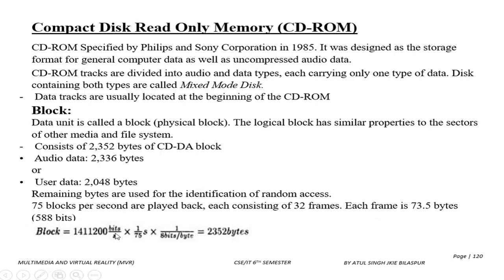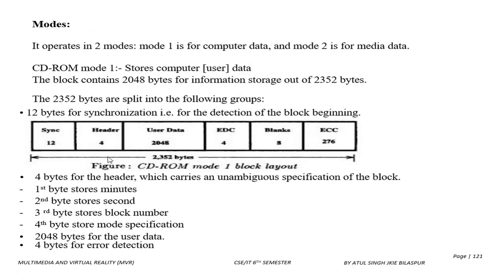We can calculate this. As we have seen in CD-DA, this is 1,411,200 bits per second. With 75 blocks per second played, we can calculate 2352 bytes per block. We can also calculate and see the modes.